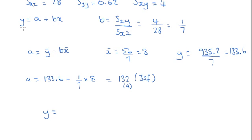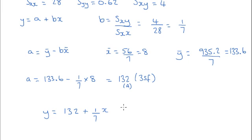Finally, we just need to write down the actual regression line in the form we wrote above. That's going to be y = 132 plus a seventh x.